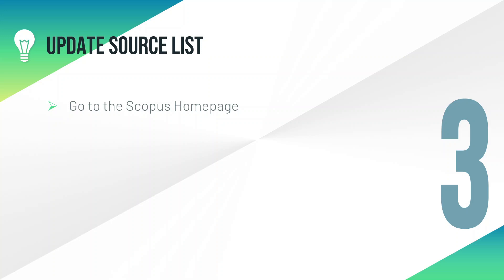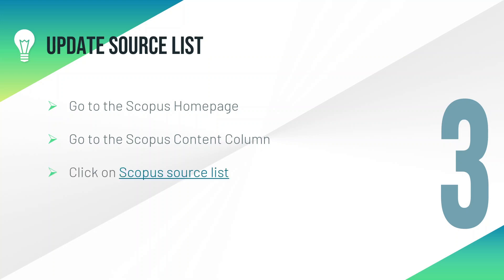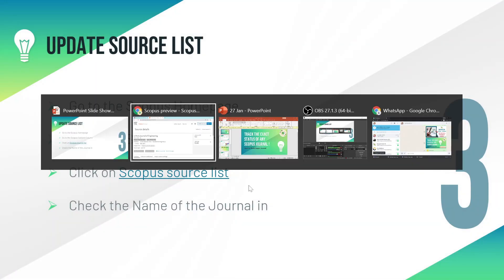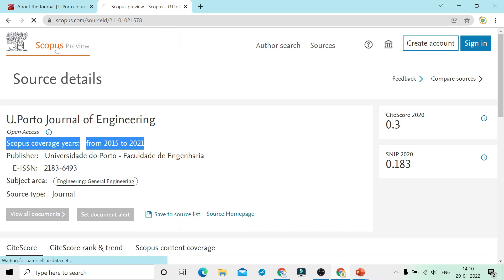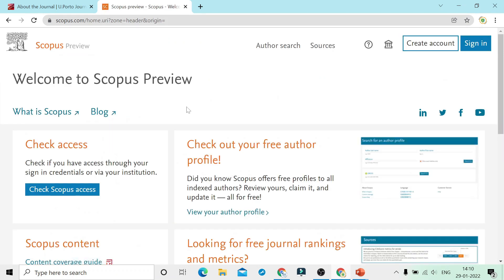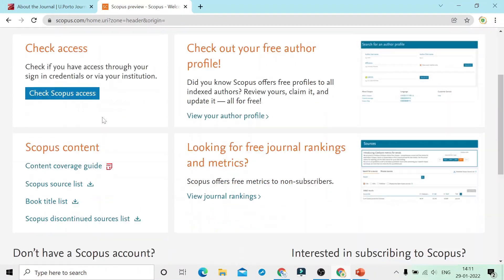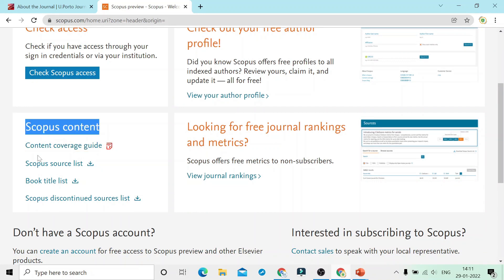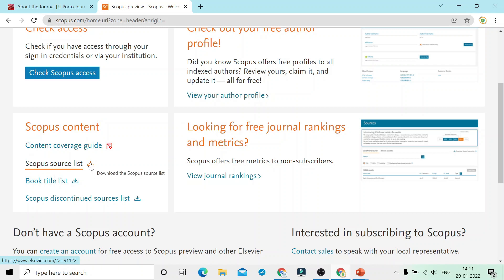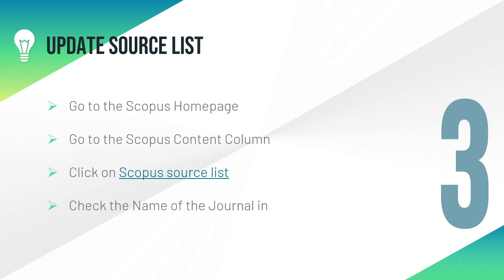The third step is to use the updated source list. Go to the Scopus homepage, scroll down to the Scopus Content section, and click on Scopus Source List. You can download the list and then check the name of that journal within it. On the Scopus official website, go to Sources, scroll down to Scopus Content, and you will find the Scopus Source List. Click it to download — that is your step three.